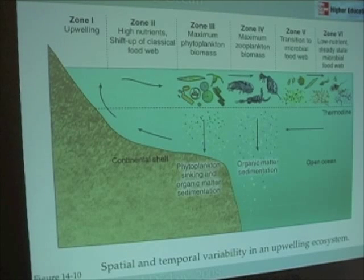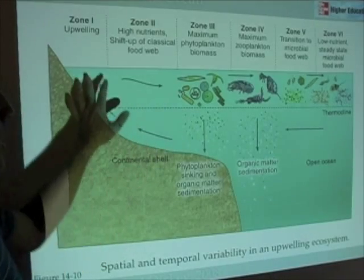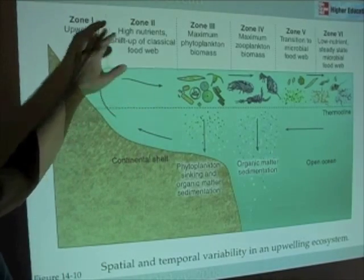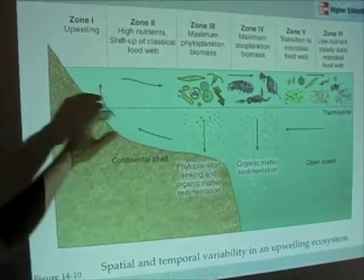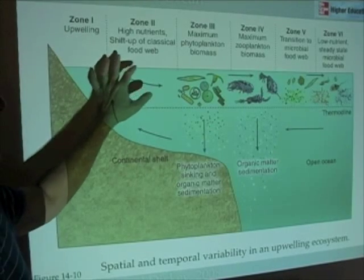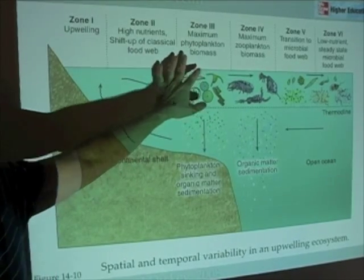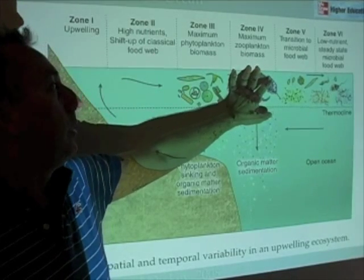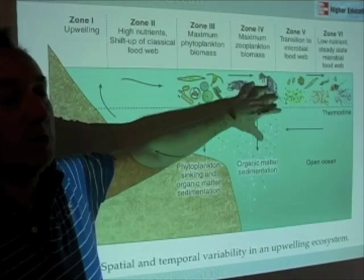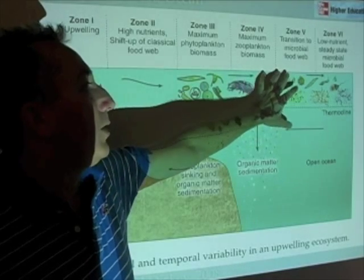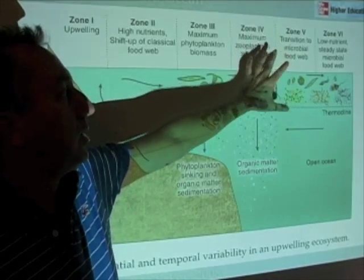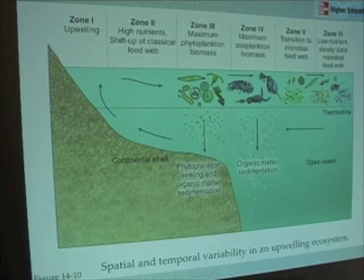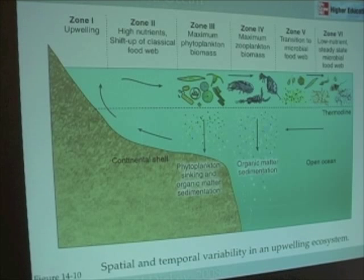Upwelling systems also vary in time, because from the onset of upwelling you have all the processes we just discussed: the stimulation of the classical food web, where the classical food web reaches its maximum biomass, where it begins to transition down as the microbial food web comes back, and then as we return to our original conditions. That's an overview of spatial and temporal variability in an upwelling system.